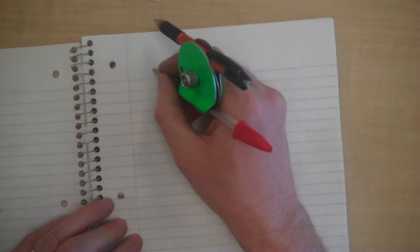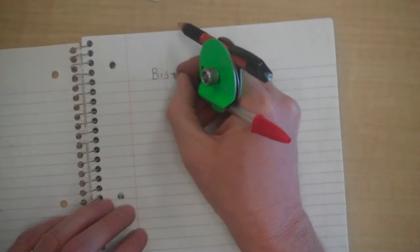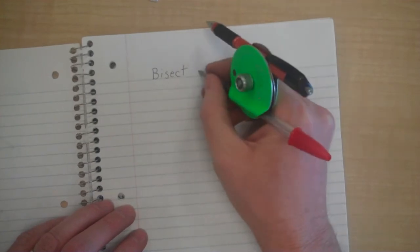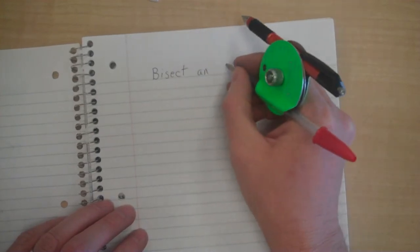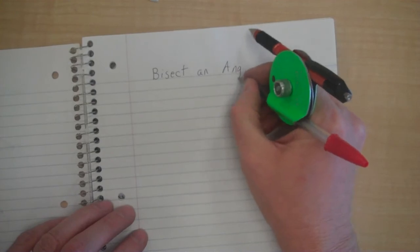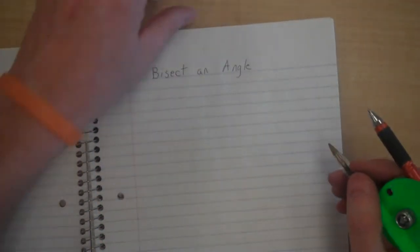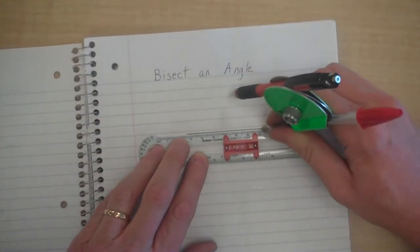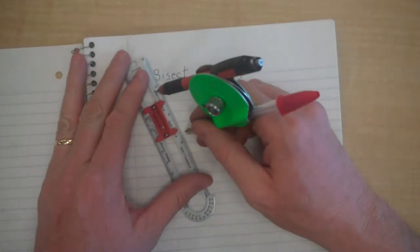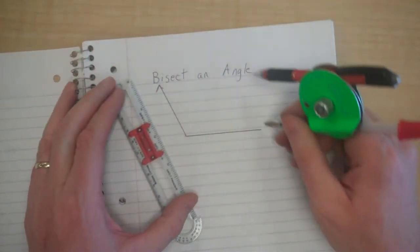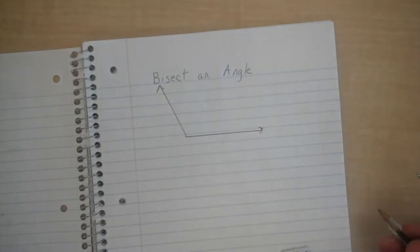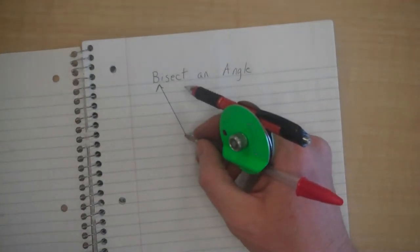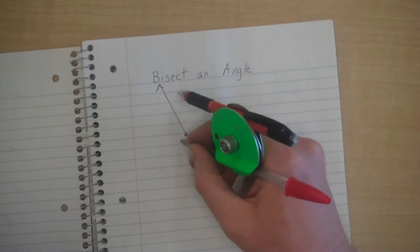And the last thing for this section is I want you to bisect an angle. Now here are the steps for bisecting an angle. First let's make an angle, and let's make it an obtuse angle just to make it interesting. I'm going to call it angle P.